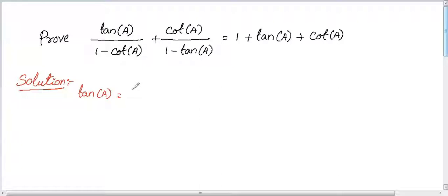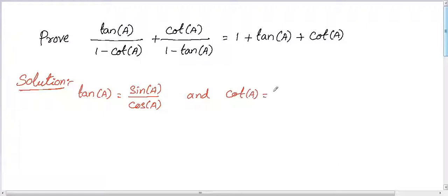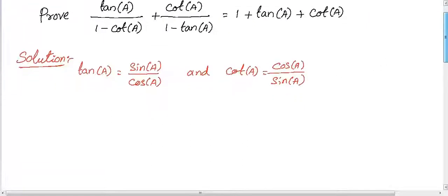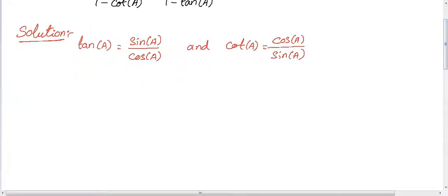We know that tan a can be written as sin a divided by cos a. Also, cot a can be written as cos a divided by sin a. So let's take the left hand side and plug in these trigonometric expressions.